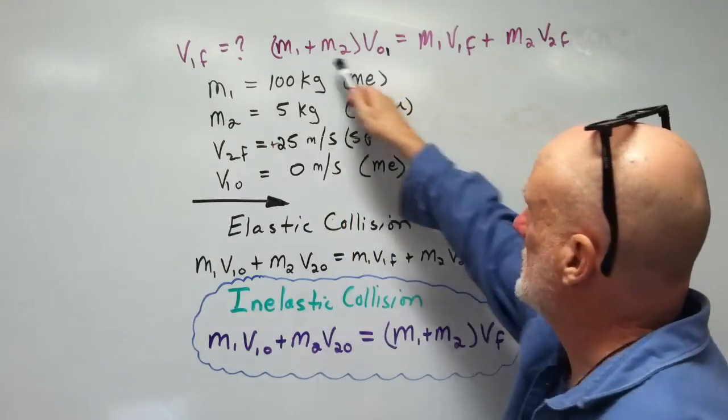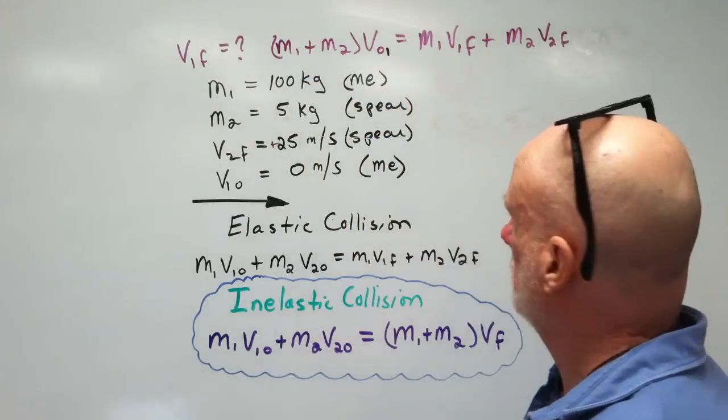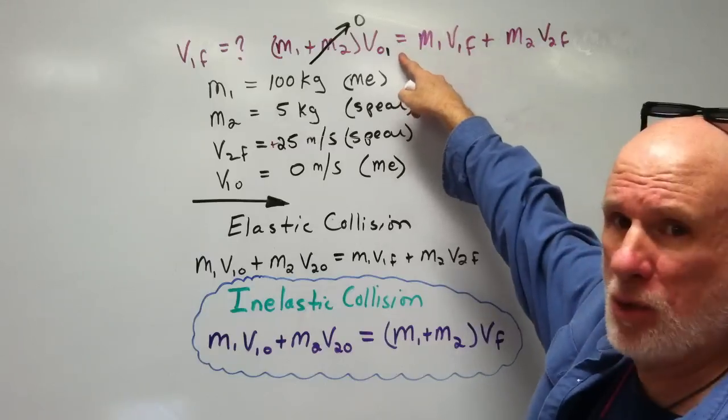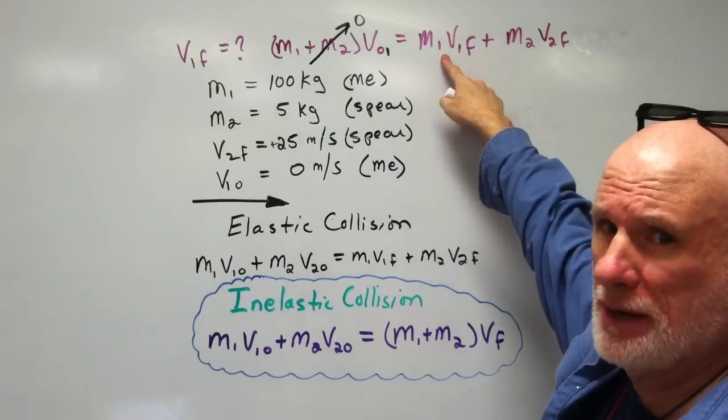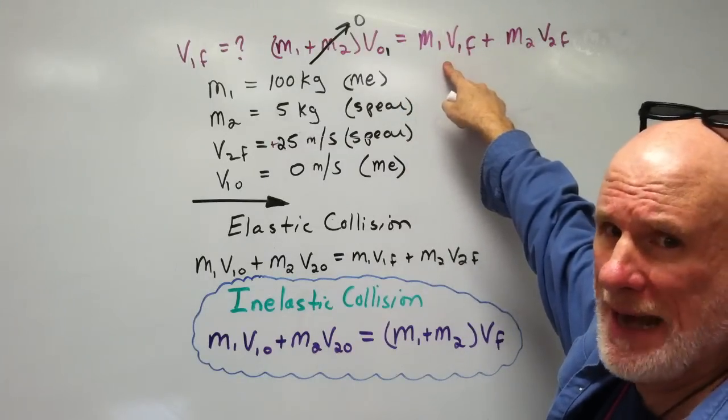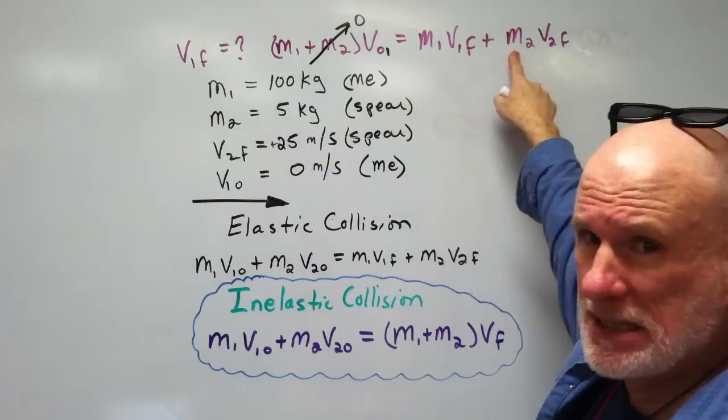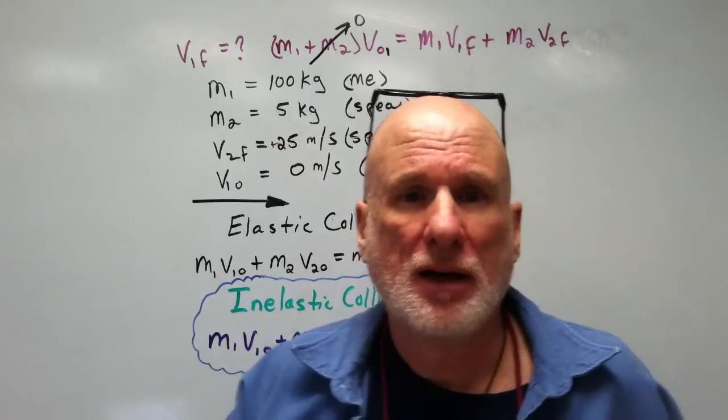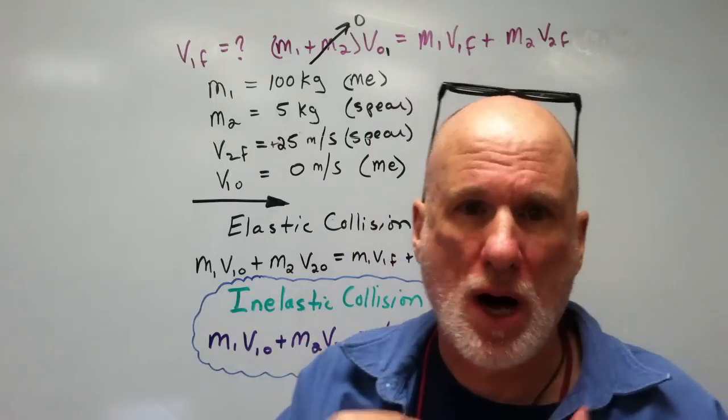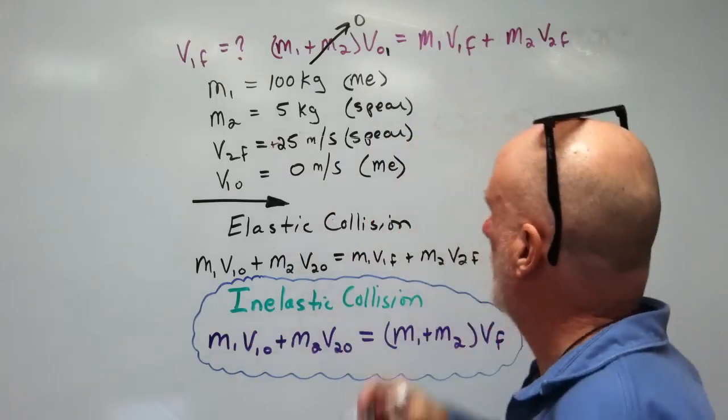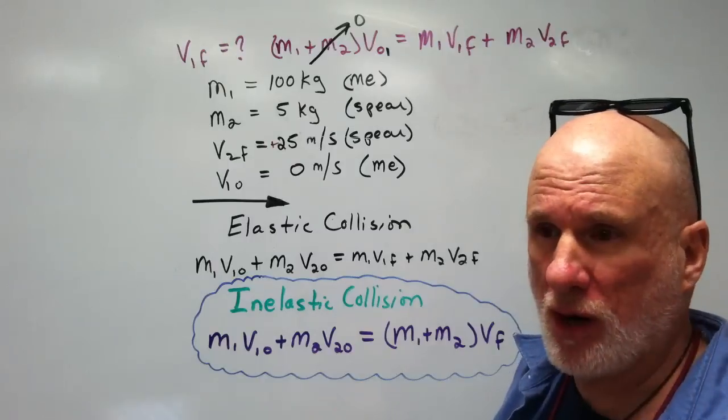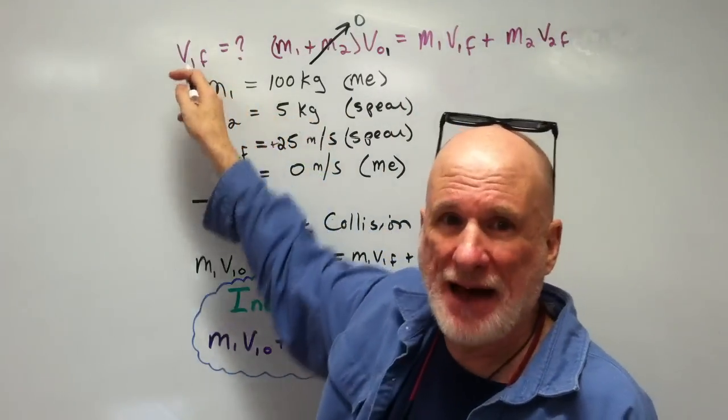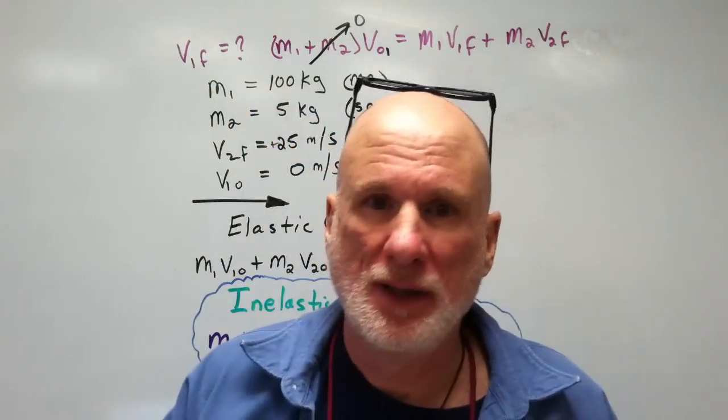zero, zero, zero, zero equals M₁V₁F plus M₂V₂F. M one, the spear is two, therefore, I want you to solve for V₁F. This is